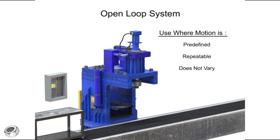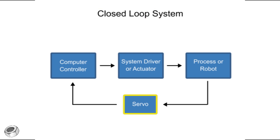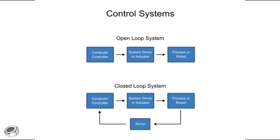The second type of control system is called closed-loop control, or servo control. A servo is a device that uses error-sensing feedback to control the motion of another device. The primary difference in an open versus closed-loop system is the addition of a feedback loop that allows the controller to make adjustments to the robot.